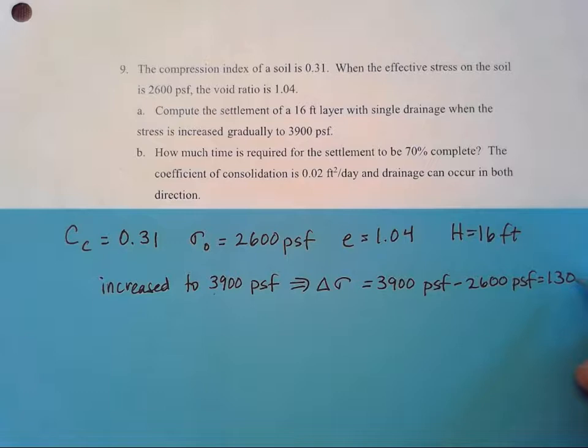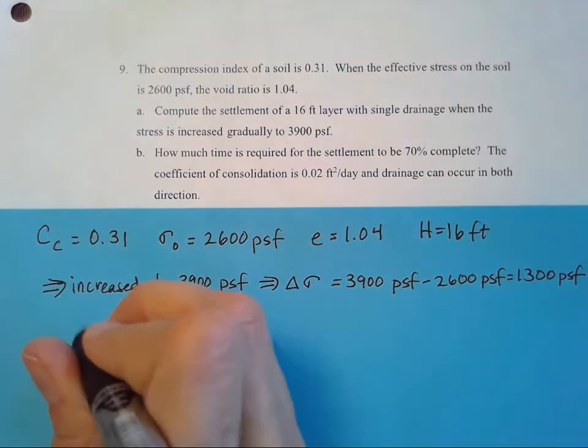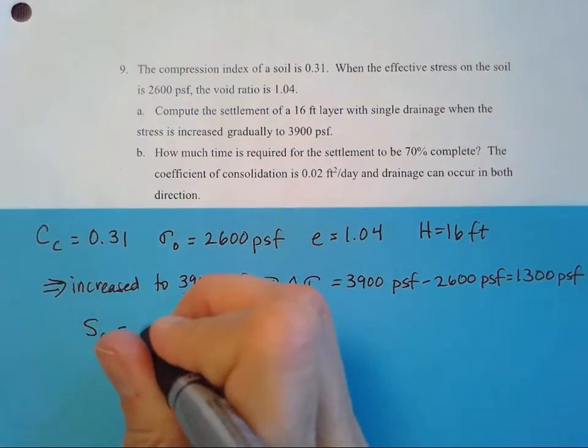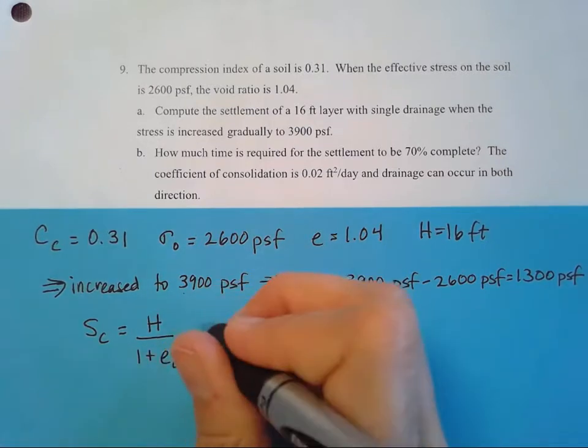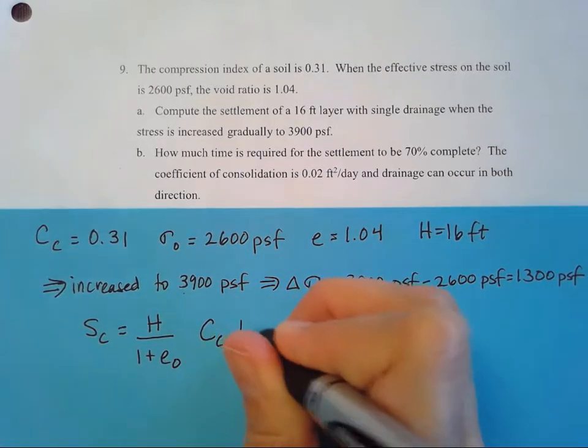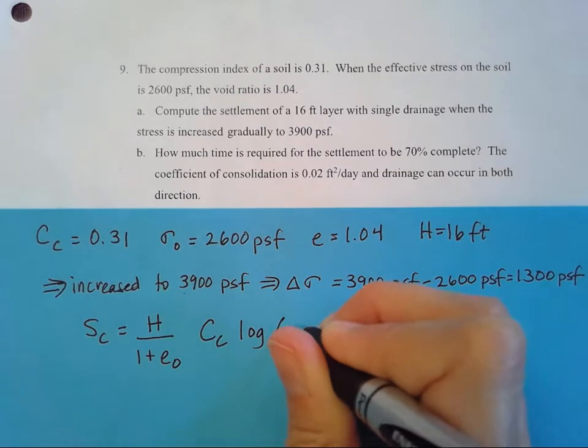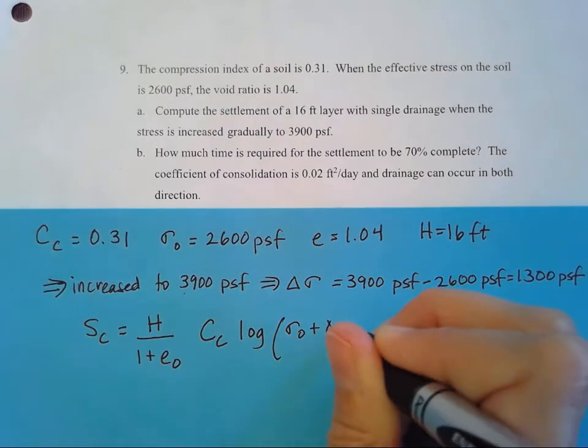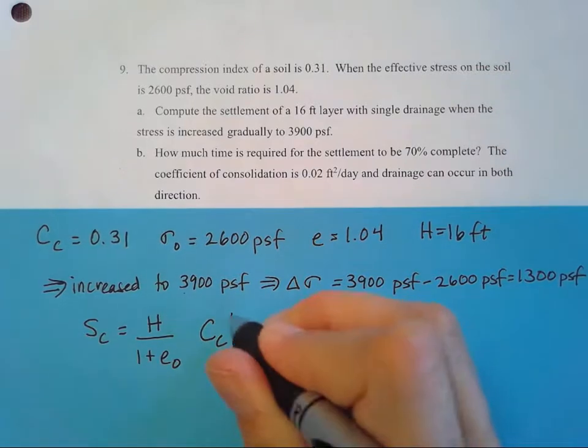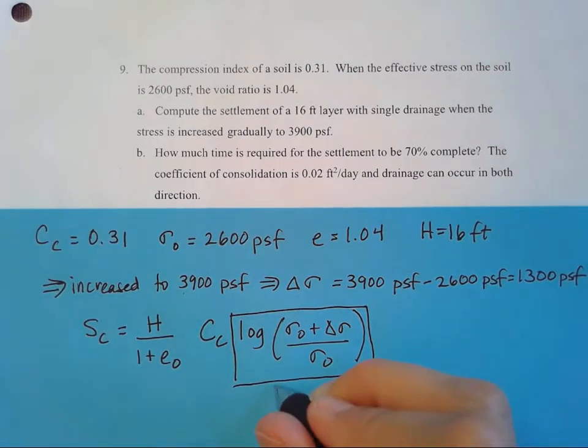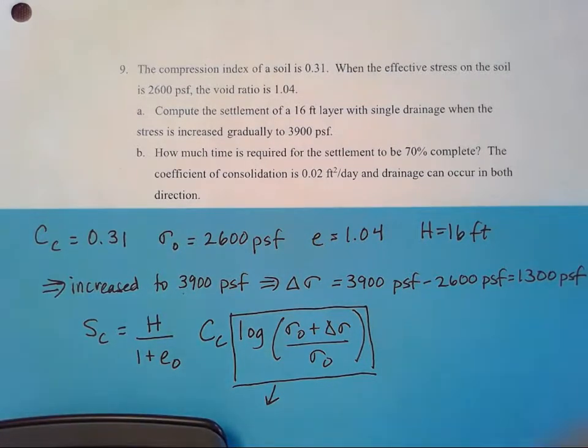Okay, so let's go ahead and take a look at our formula here. We'll use that long one with the C sub C. We have H over 1 plus the initial void ratio times that coefficient times that log of sigma naught plus delta sigma over sigma naught. I'm going to go ahead and do this log piece first and get a decimal for that and then I'll plug in the other values.